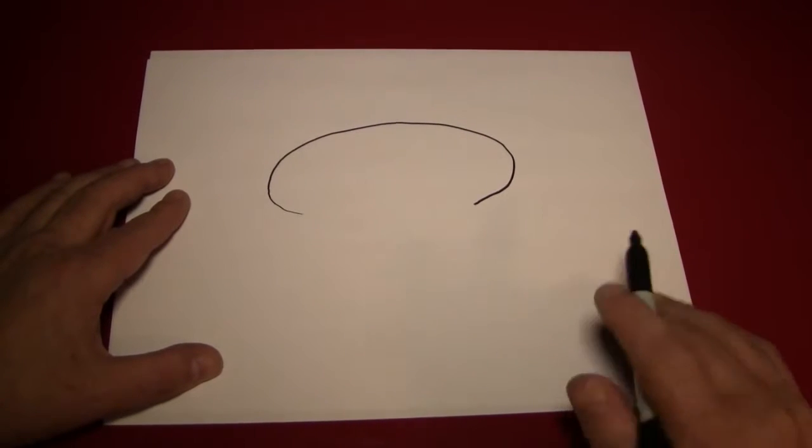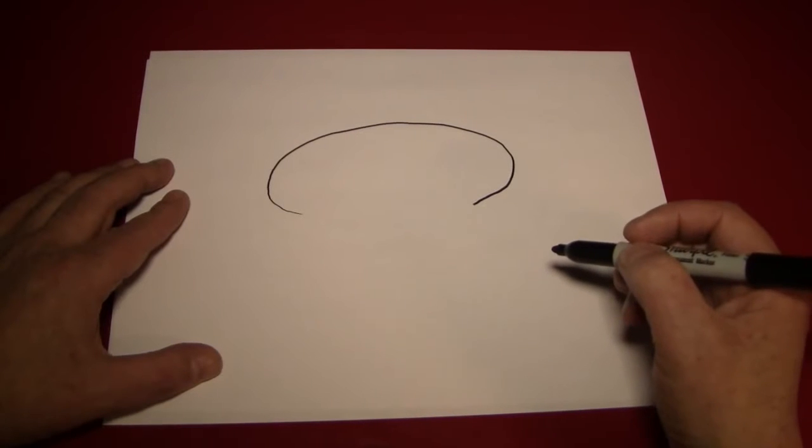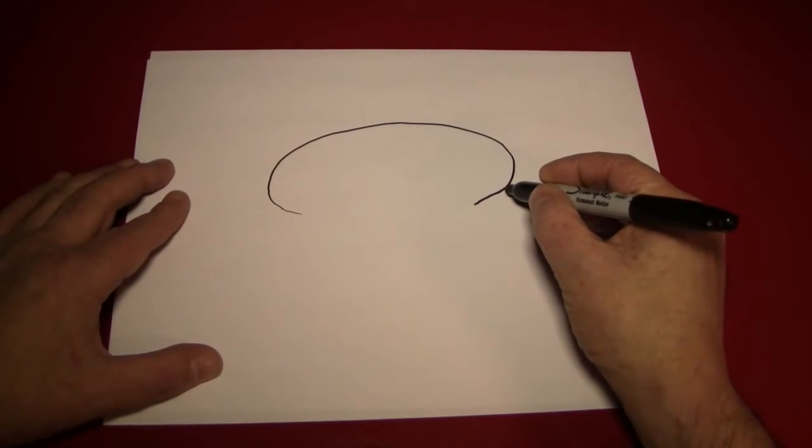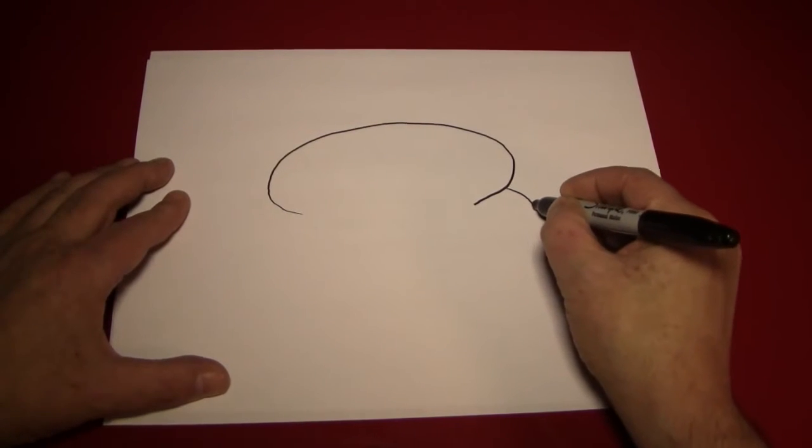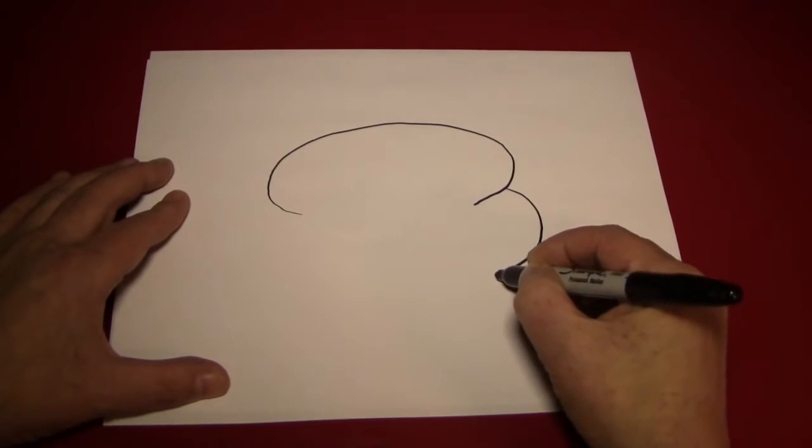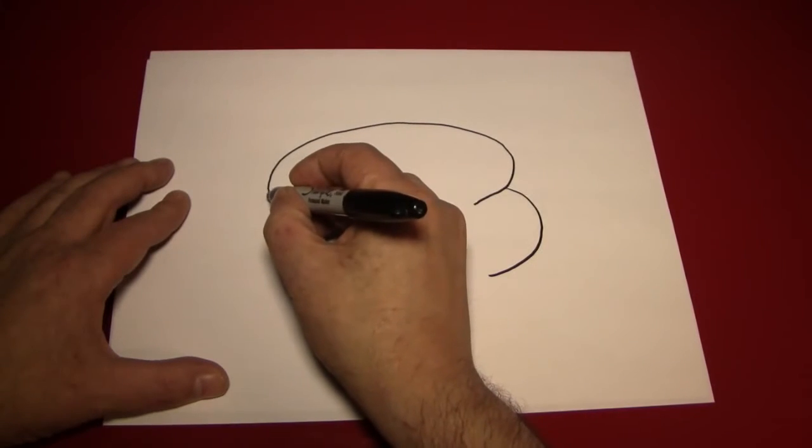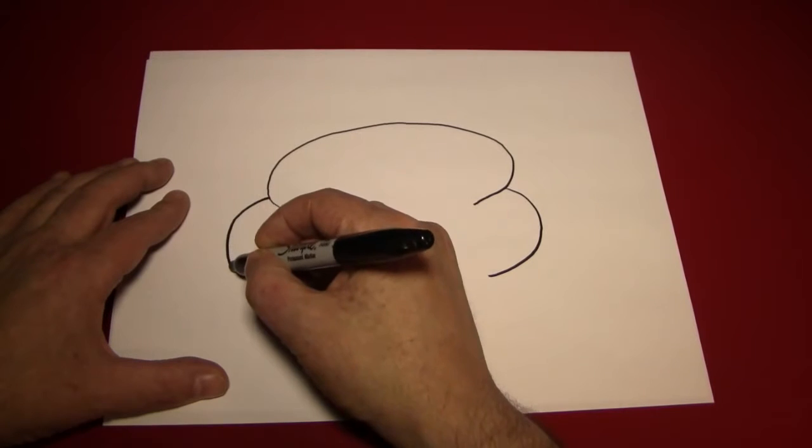Now we're going to put big curves on the sides, like this, coming from our egg shape. Put one on the left and one on the right.